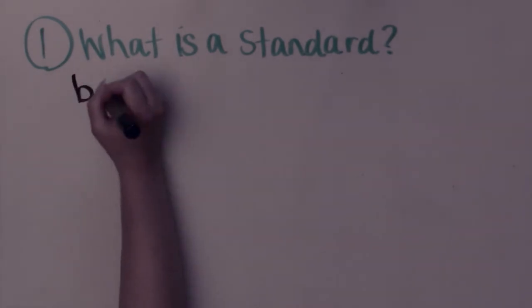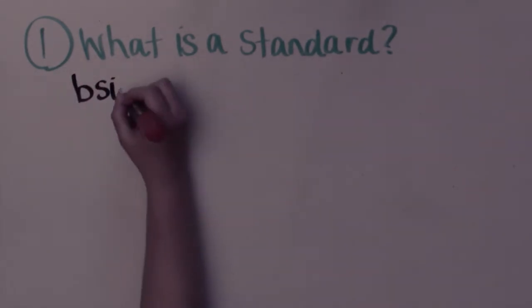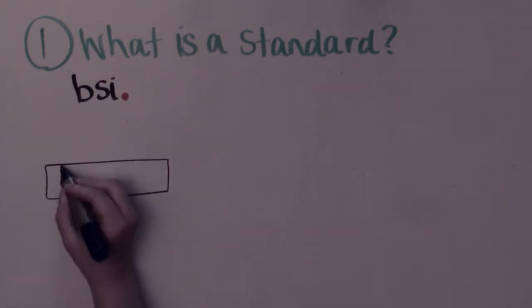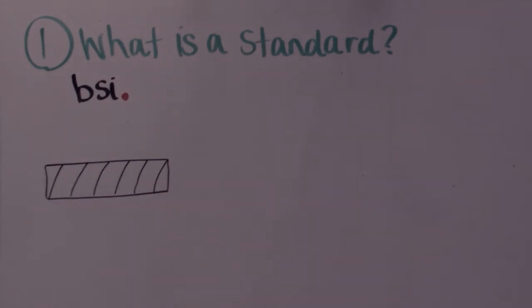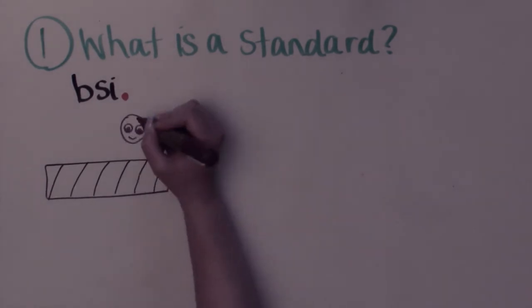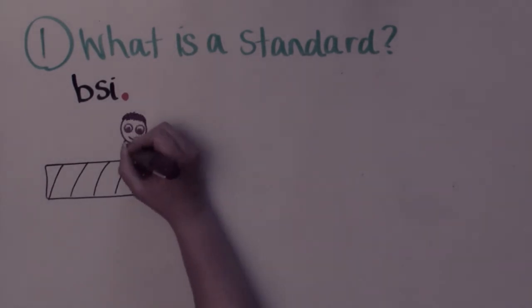The British Standards Institution describes standards as an agreed way of doing something. It could be about making a product, managing a process, delivering a service, or supplying materials.